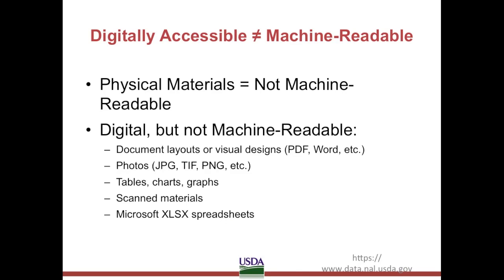There's a good chance you don't use all of those file formats regularly. However, it's important to remember that just because data are digitally accessible does not necessarily mean that they are machine-readable. Physical materials are obviously not machine-readable, but digital materials are not automatically machine-readable either. A digitally accessible document may be online, making it easier for humans to access using computers, but its content is much harder to extract, transform, and process using computer programming logic if it is not in machine-readable format.